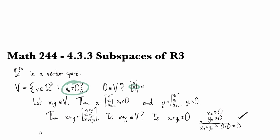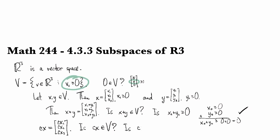What about c times x? I'm checking closure under scalar multiplication now. So this is [cx1, cx2, cx3]. Is cx an element of V? Then this amounts to asking, is c times x2 non-negative? Is that guaranteed to be non-negative? No, because we're allowed to use any number in R. And so this fails if c is a negative number. So this is not a vector space.